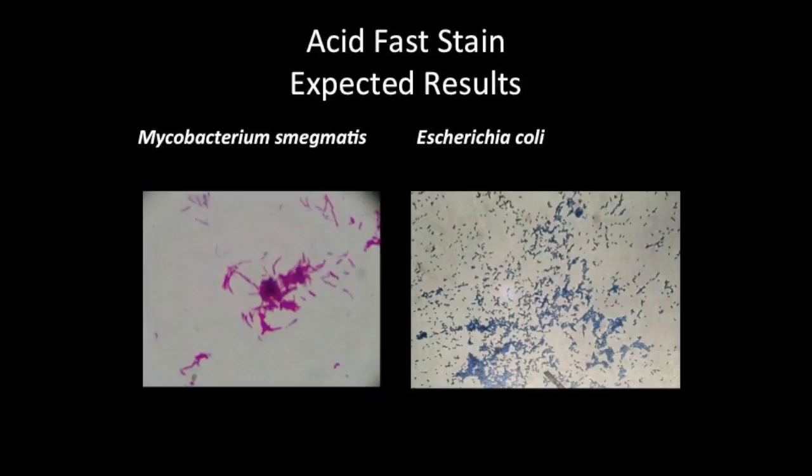E. coli, as we saw in the Gram stain procedure, is a small rod. This can be observed in the image on the right. Take note that the small rods are blue, so this tells us that E. coli is a non-acid-fast bacteria.